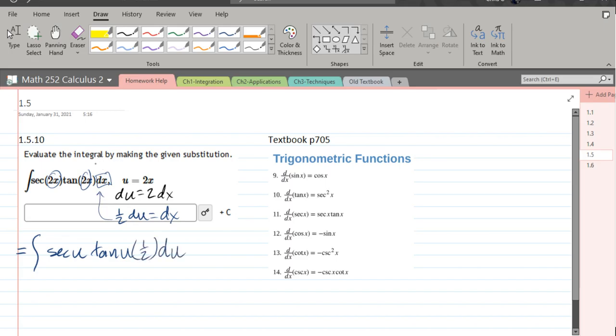So first thing we're going to do is pull that 1 half out front. So we've got secant u, tan u, du. Okay, so now from here, you need to finish evaluating this integral.